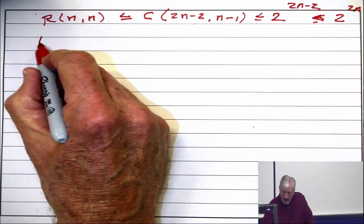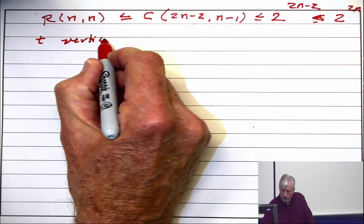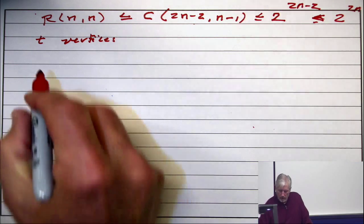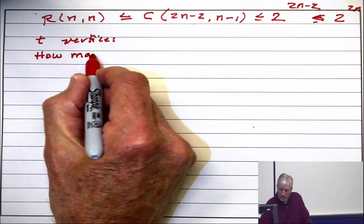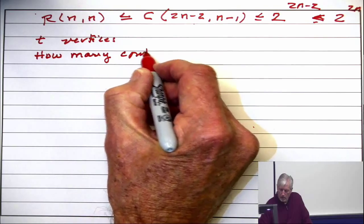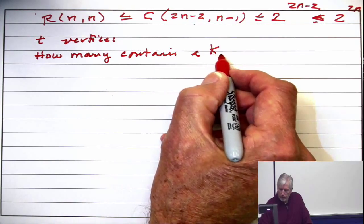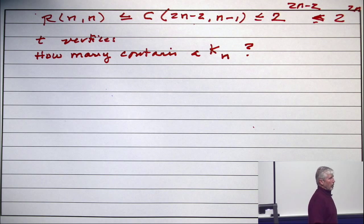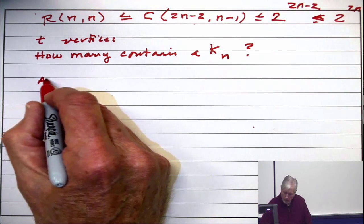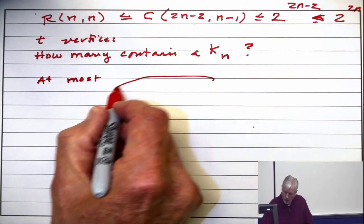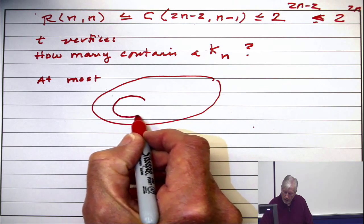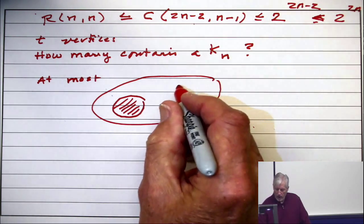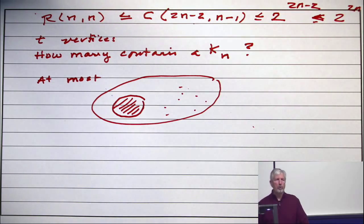Let's say I have a graph on T vertices. I don't mean to tell you what T is. How many of the graphs that I can form, how many contain a complete graph of size n? I want to know the answer. Well, here's an upper bound. At most, so you take your whole T vertices, and you choose n, and you make this a clique, and then out here you can do anything you want. And between here and here you can do anything you want.